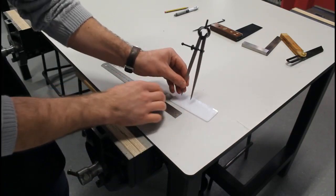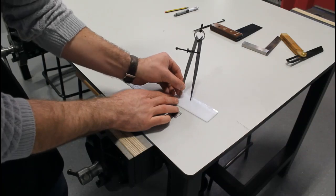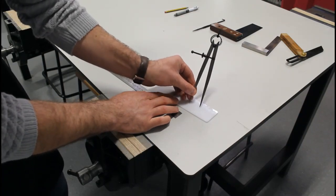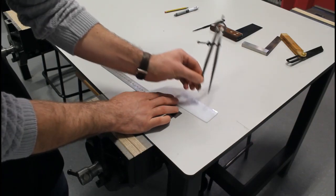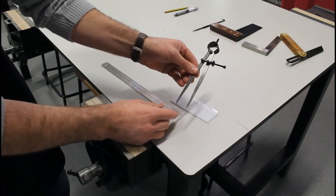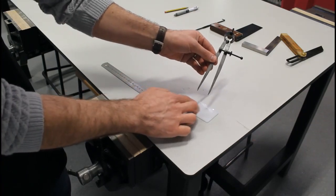We can place that on the material and scribe 30, 30, 30. So this is called a dividers and as you can see it's dividing up the spaces.